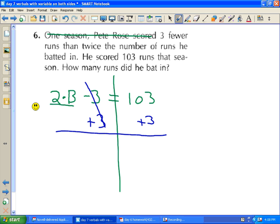The negative three and positive three cancel each other out and we have 106 on the right-hand side. 2B on the left-hand side. We now have multiplication going on. So we can eliminate the multiplication by doing the opposite which is division. We divide by 2. Divide by 2. Divide by 2.